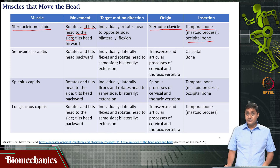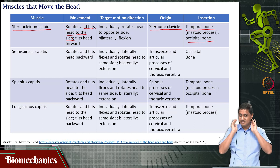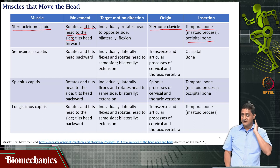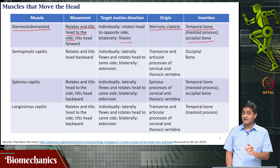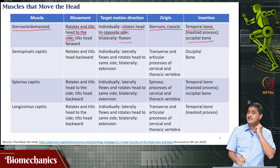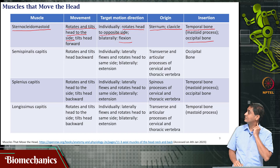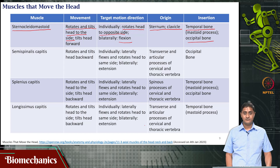There are sternocleidomastoid muscles on both the left side and the right side. When both of them are acting together, they perform flexion. But when only one of them is acting and the other is not activated, it rotates the head to the opposite side — that is the action you get from unilateral contraction.